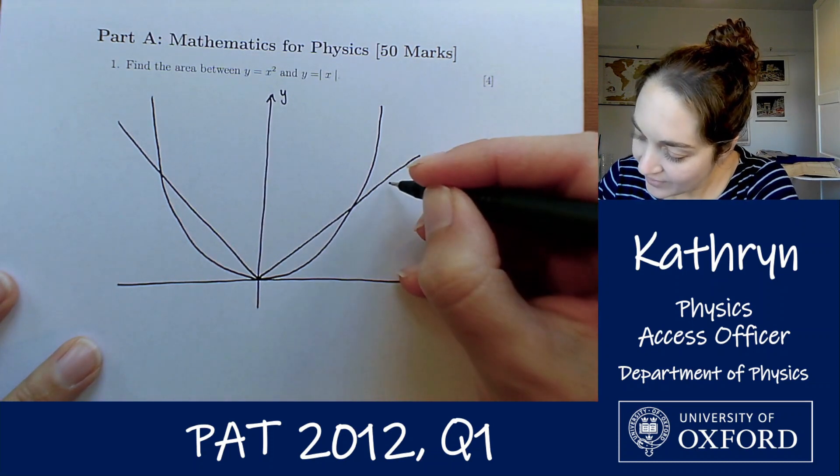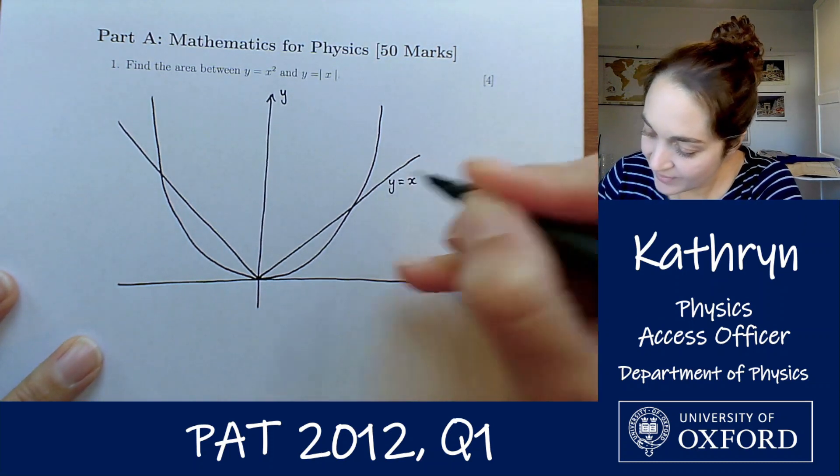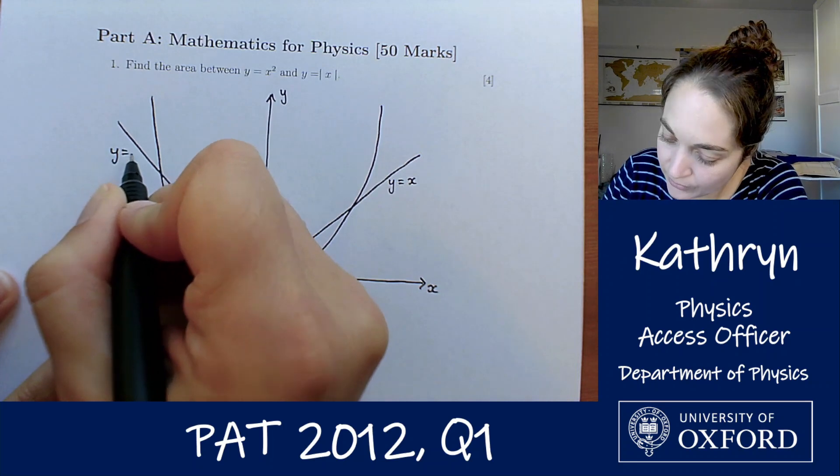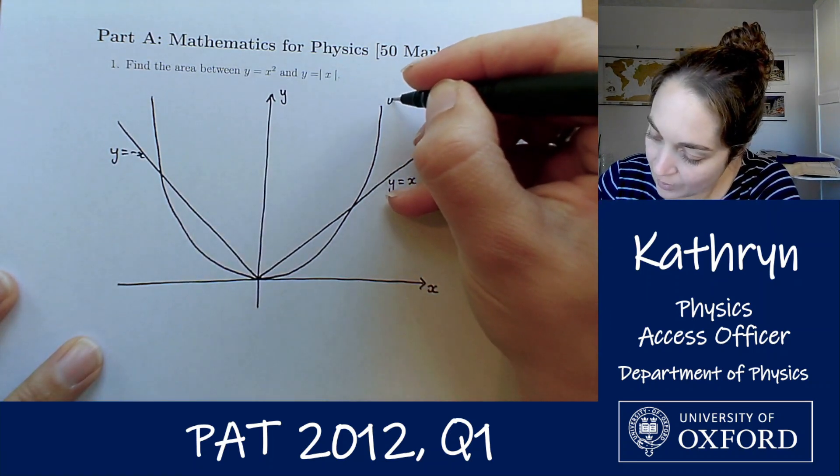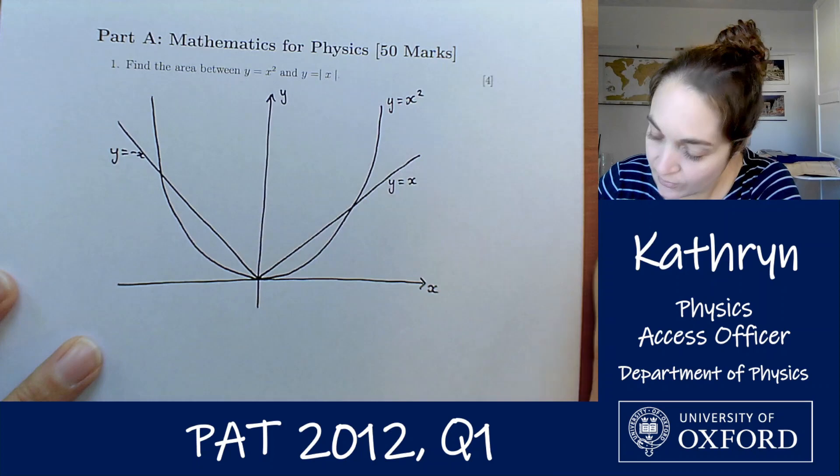Okay, so this is essentially y equals minus x, this is essentially y equals minus x, and this is our y equals x squared.